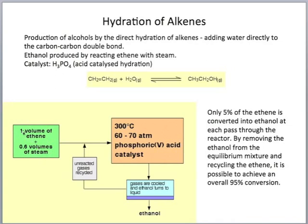By removing the ethanol from the equilibrium mixture and recycling the unreacted ethene, it is possible to achieve an overall 95% conversion. Using one part ethene plus 0.6 parts steam under these conditions, when the gases are cooled the ethanol turns to liquid. Anything unreacted is simply returned, allowing up to 95% conversion from ethene to ethanol.